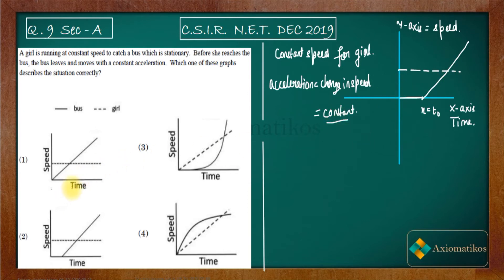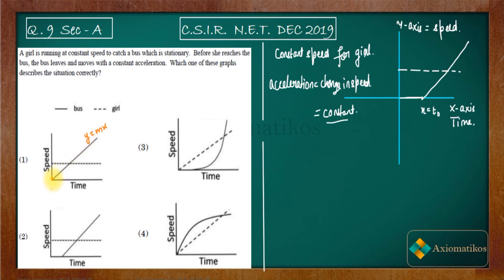Looking at the options: in the first option (option C shown), the bus line is a straight line beginning from zero — meaning acceleration is constant from the very start. But it was given that the bus was stationary initially, so it cannot start accelerating from t = 0. This option is incorrect.